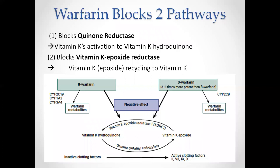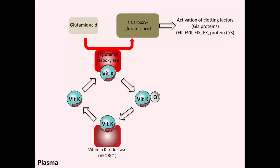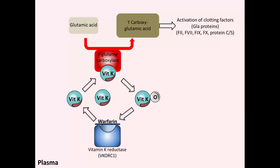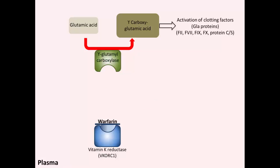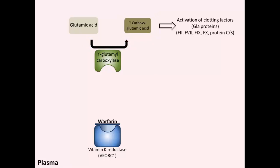Warfarin is present as a racemic mixture of R and S warfarin; S-warfarin is three to five times more potent than R-warfarin. Warfarin binds to vitamin K reductase in liver cells, inhibiting its activity and decreasing production of the reduced form of vitamin K. This leads to deactivation of gamma-glutamyl carboxylase, impairing conversion of glutamic acid into gamma-carboxyglutamic acid. The resulting decrease in gamma-carboxyglutamic acid suppresses production of clotting factors containing GLA proteins — specifically factors 2, 7, 9, and 10 — as well as protein C and protein S.